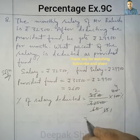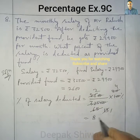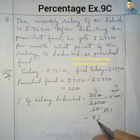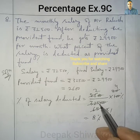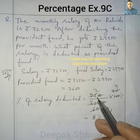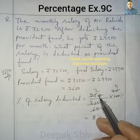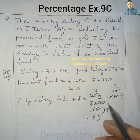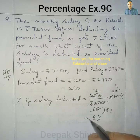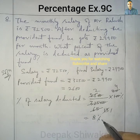So 8% of the salary is deducted as provident fund. The difference of the salary divided by the original salary, multiplied by 100%, gives us the percent of salary deducted as provident fund.